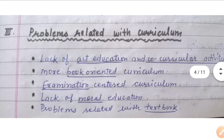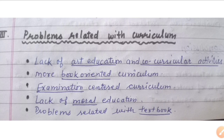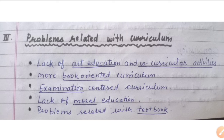The next issue is problems related with curriculum. The first problem is lack of art education and co-curricular activities. Some schools focus only on curricular activities and neglect co-curricular activities, but both are important for children's creativity. The next point is more book-oriented curriculum, and after that is examination-centered curriculum, where everything revolves around exams.